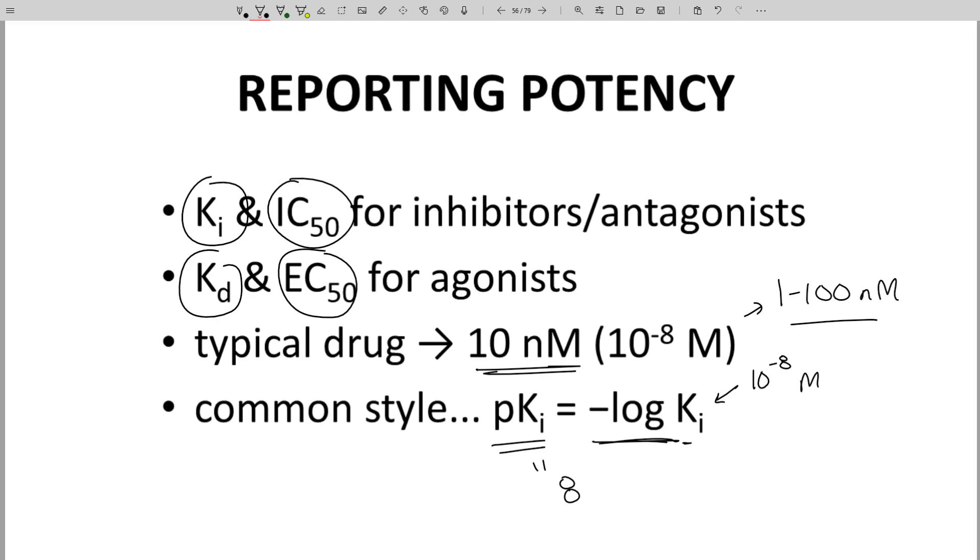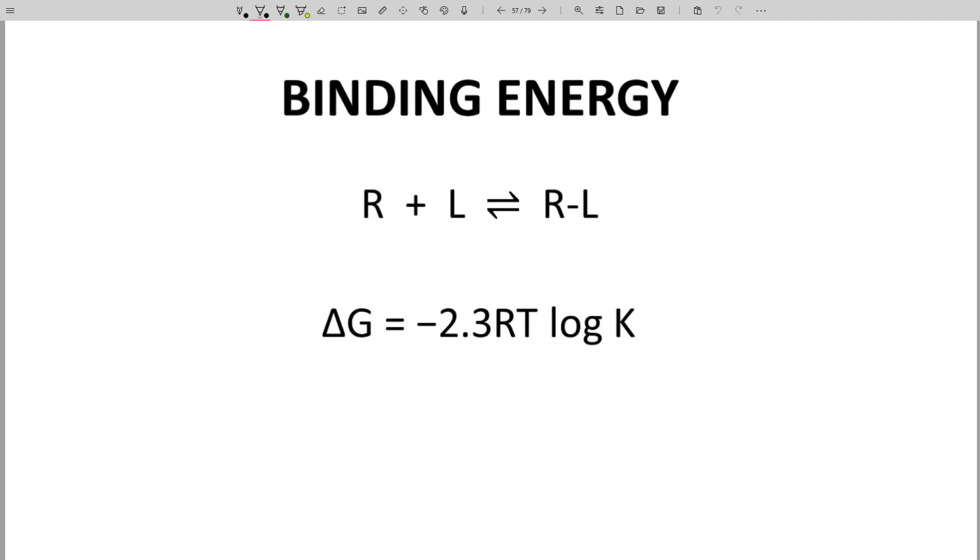So this is the kind of potency that a molecule should have after lead optimization as it advances into clinical trials. Let's focus on the potency measures KI and KD. These are equilibrium constants. Here is the equilibrium of binding, that's association for a receptor ligand. R plus L goes to the RL complex.